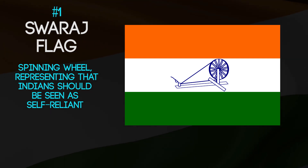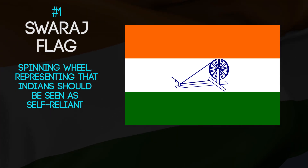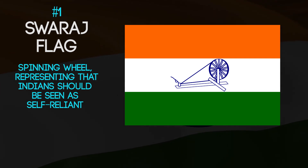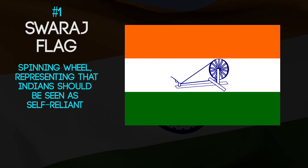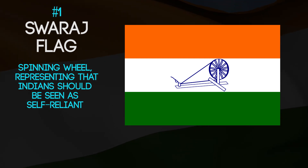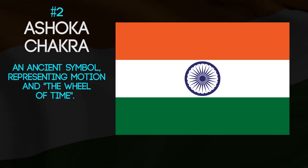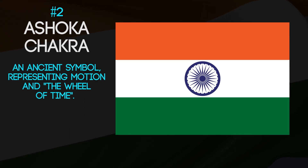In the Swaraj flag, there was a symbol of a traditional spinning wheel, a symbol proposed by Mahatma Gandhi to represent that Indians should be seen as self-reliant by fabricating their own clothing and developing the country's textile manufacturing industry. This symbol, however, was replaced by a new but ancient symbol: the Ashoka chakra.